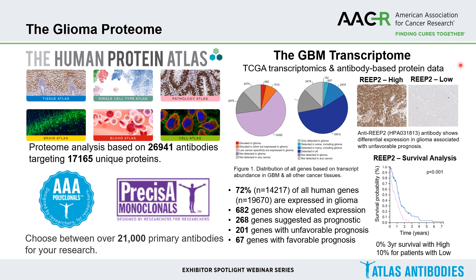The Cancer Genome Atlas glioblastoma project contained proteomic data for only 214 proteins. The glioblastoma transcriptome has identified that 72% of all human genes are expressed in glioma, and of those, 682 genes showed elevated expression. 268 genes are suggested as prognostic — more than the total number of proteins employed by the Cancer Genome Atlas. Of those, 201 are associated with unfavorable prognosis, such as REAP2, and 67 genes are associated with favorable prognosis. I urge you to explore the glioma proteome and use these molecular markers to perhaps uncover the secrets that precipitate the next revolution of molecular classification in glioma, with the hope of contributing to better treatment strategies for these patients.